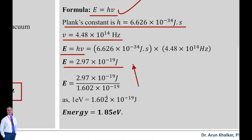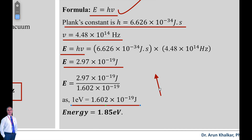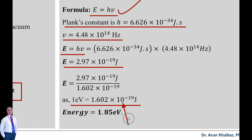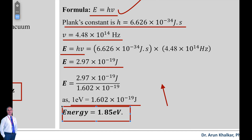Calculating this, we get energy 2.97 × 10⁻¹⁹ joule. Converting this energy into electron volts: E = (2.97 × 10⁻¹⁹) / (1.602 × 10⁻¹⁹), as one electron volt equals 1.602 × 10⁻¹⁹ joules. We get the energy 2.97 × 10⁻²⁰ joule. This is the solution of problem number 2.